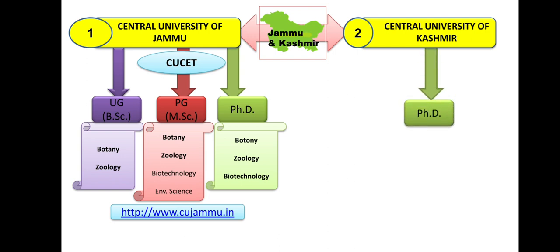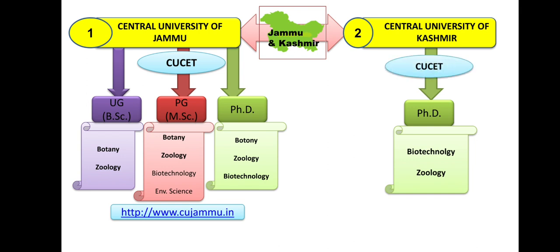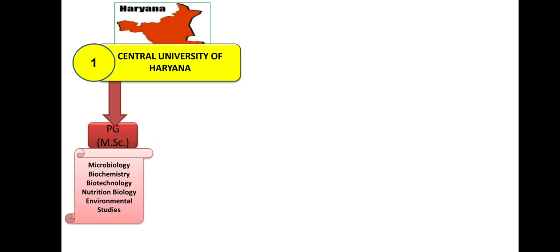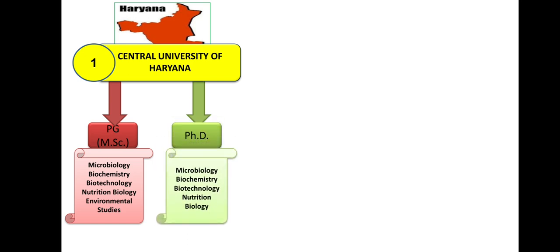The Central University of Kashmir: here UG and PG in Biological Science are available, and PhD is in Biotechnology and Zoology. Admission will be through CUCET. Next is Haryana — Central University of Haryana. Here there is PG (MSc) in Microbiology, Biotechnology, Nutrition Biology, and Environmental Studies. PhD is available in Microbiology, Biotechnology, and Nutrition Biology. For admission, you must qualify HEAT (their own entrance exam). The website is provided.